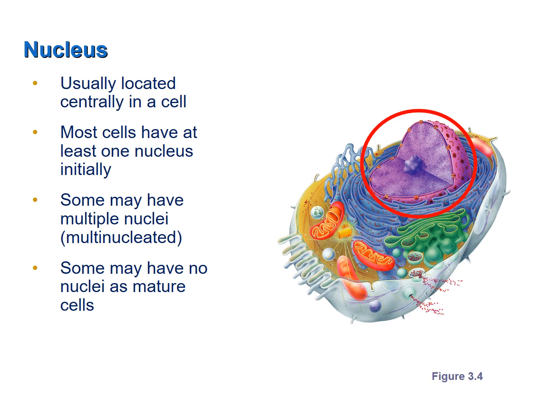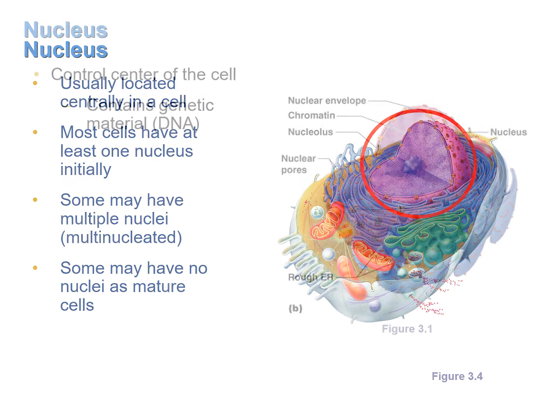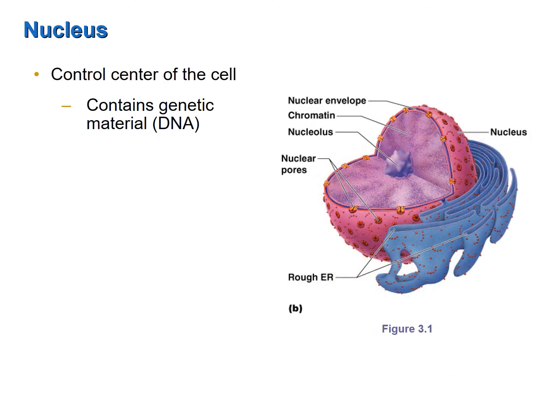Some cells, when they're mature, have no nuclei at all, such as red blood cells. The nucleus is often referred to as the control center of the cell, because it is where the DNA, or genetic material of the cell, is located.